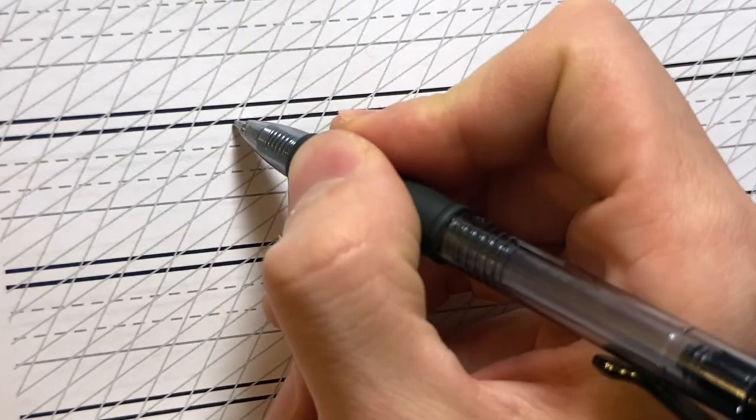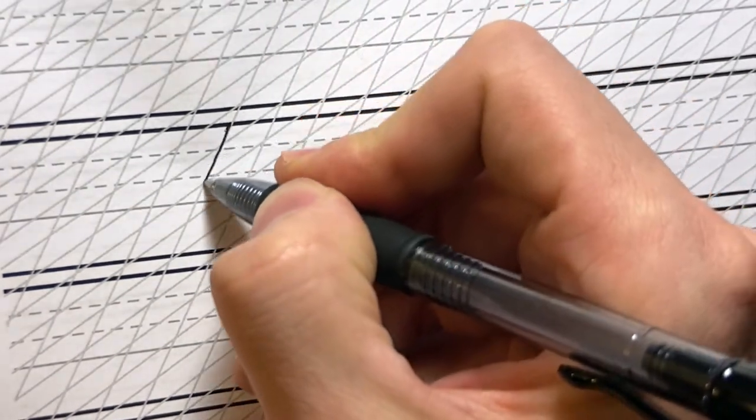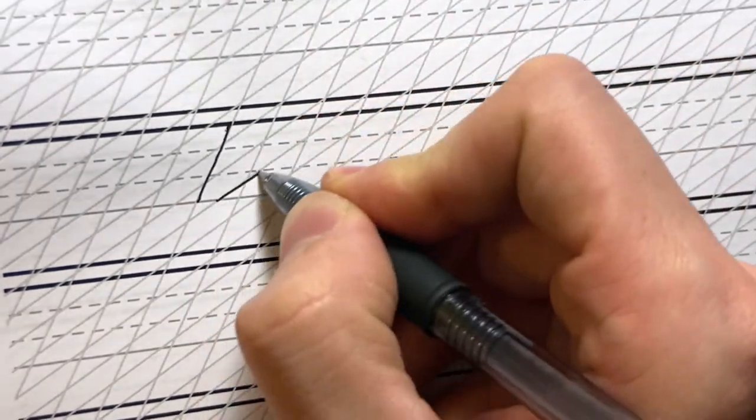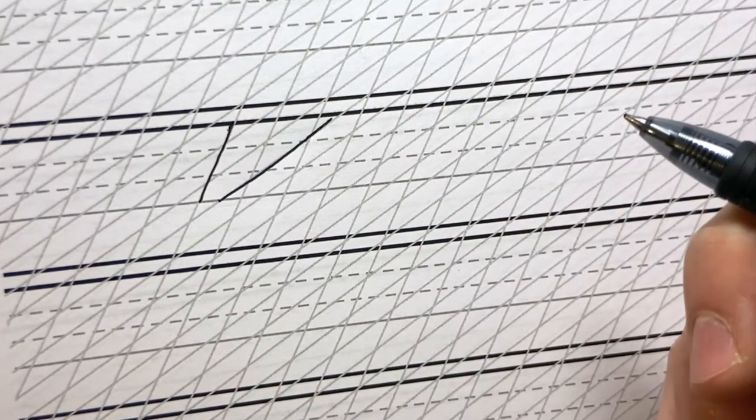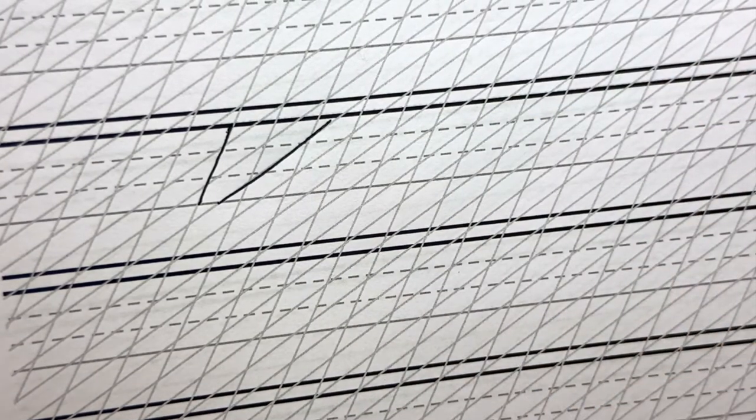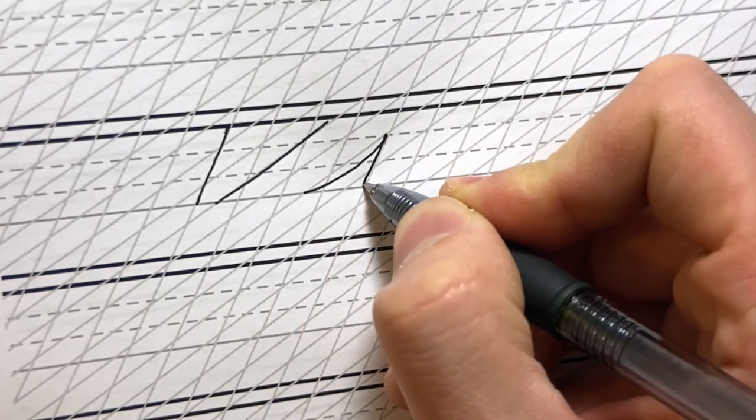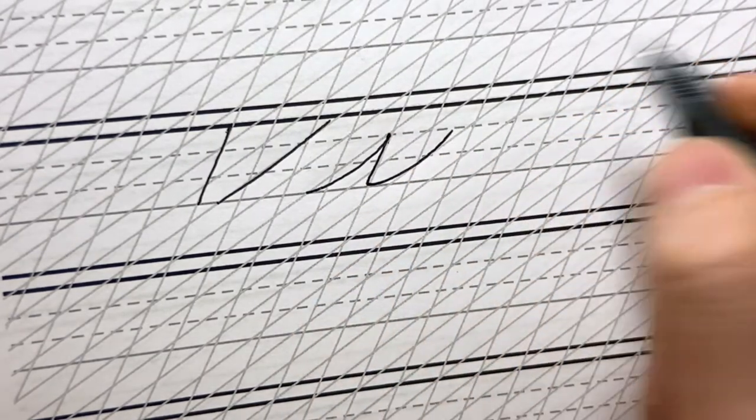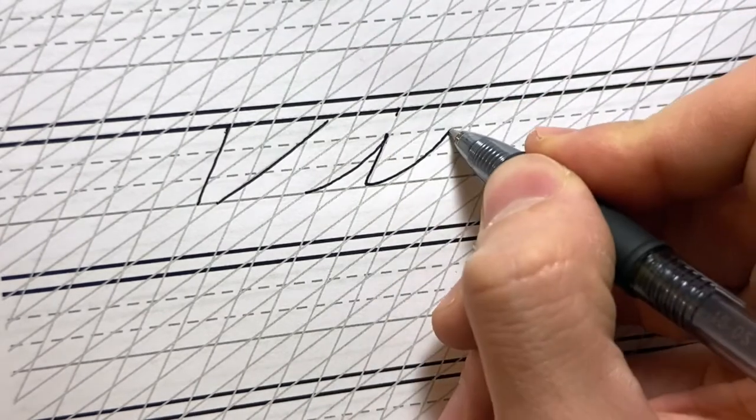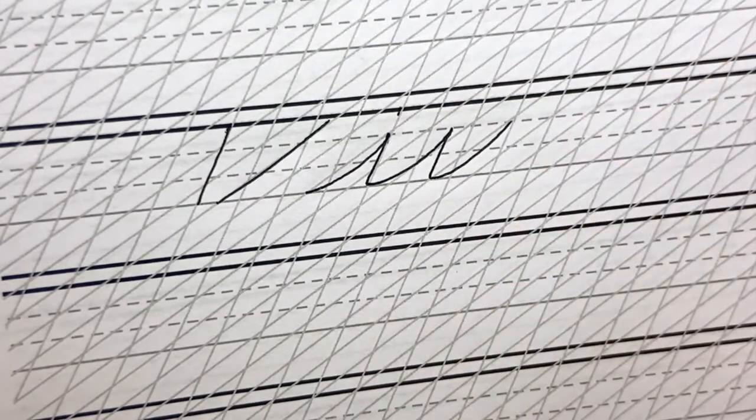Something that might help you is to use guidelines that have both the main slant and the connective slant overlaid on them. So you can see we have the main slant here and then we have our connective slant here overlaid on the guidelines here. And what that does is just makes it very easy for me to write a consistent hand because I have these guidelines as I'm writing.